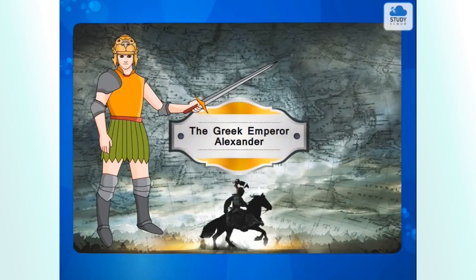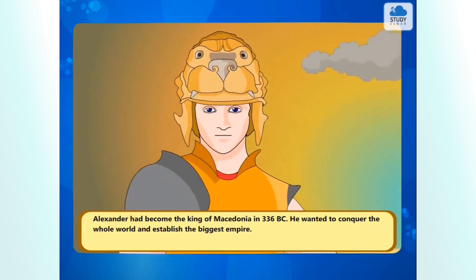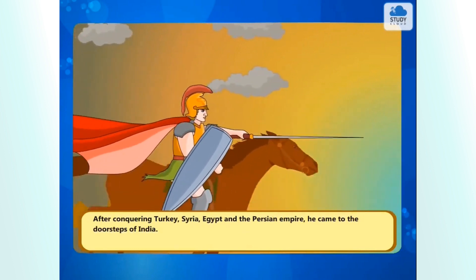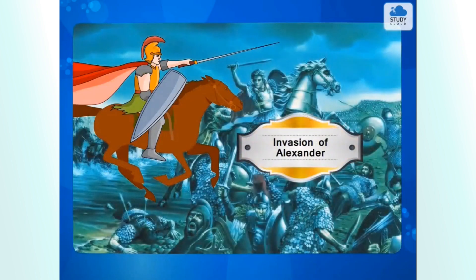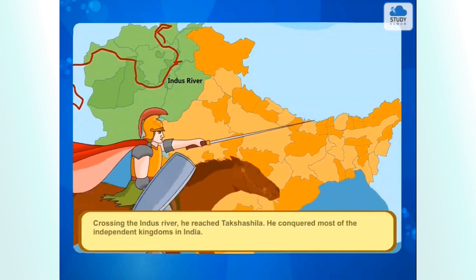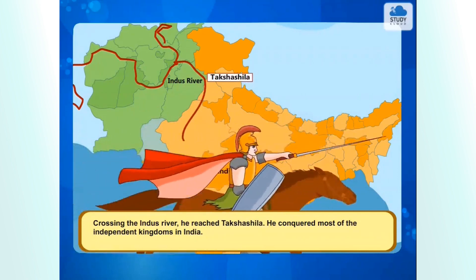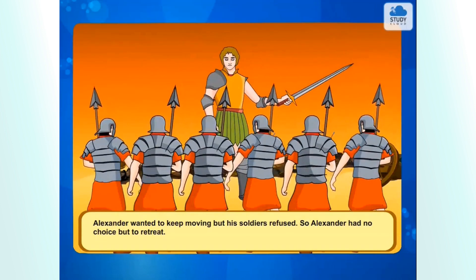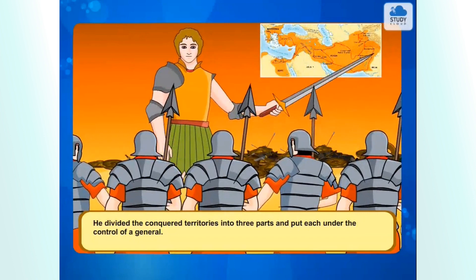The Greek Emperor Alexander had become the king of Macedonia in 336 BC. He wanted to conquer the whole world and establish the biggest empire. After conquering Turkey, Syria, Egypt and the Persian Empire, he came to the doorsteps of India. Alexander invaded India's northwest frontier in 326 BCE. Crossing the Indus River, he reached Takshashila and conquered most of the independent kingdoms in India. Alexander wanted to keep moving but his soldiers refused, so he had no choice but to retreat. He divided the conquered territories into three parts and put each under the control of a general.